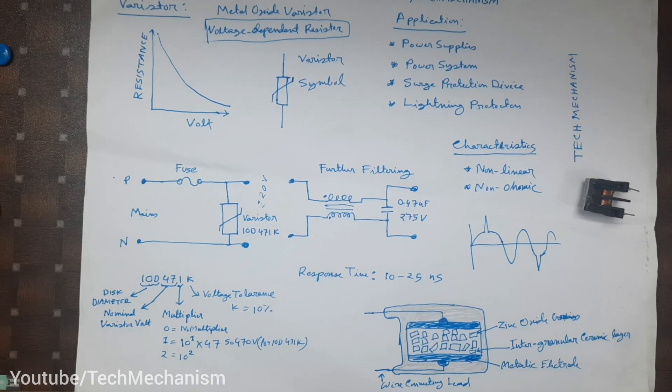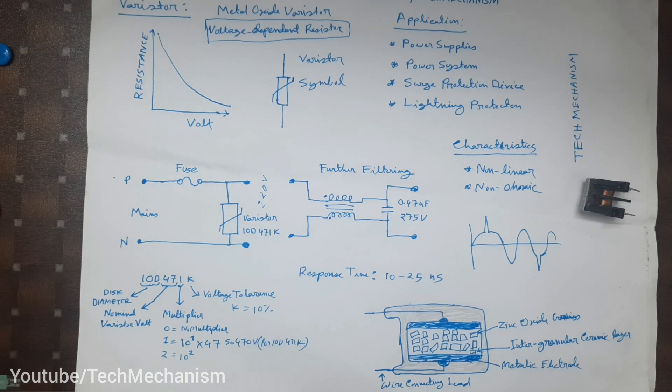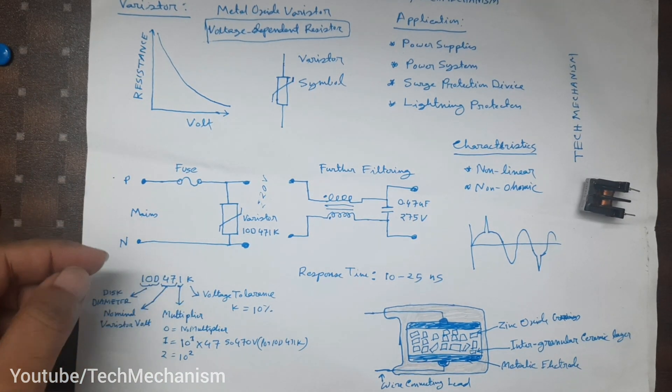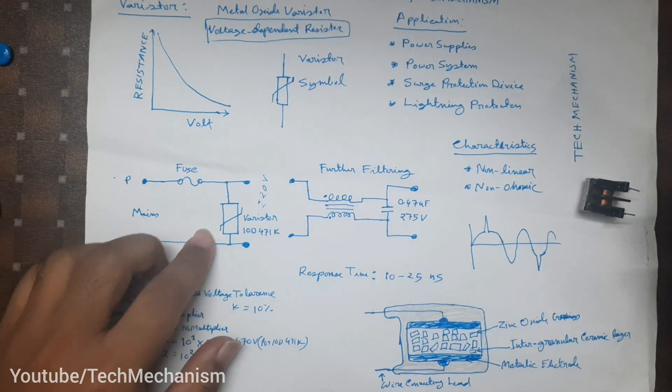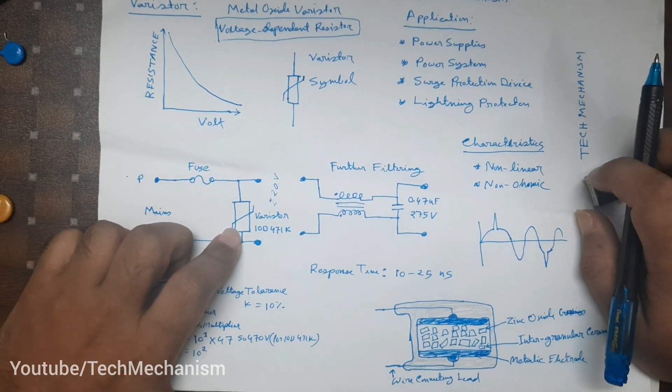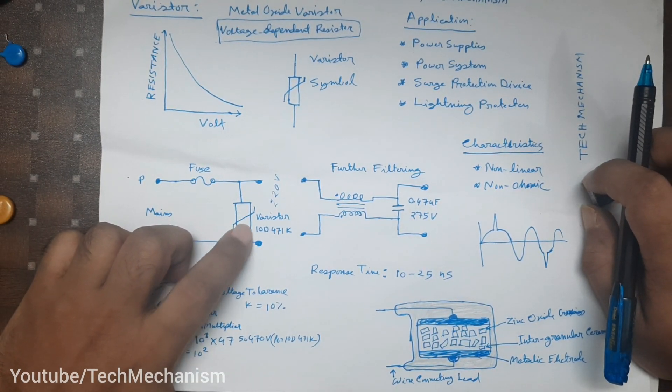How we can protect our device from this surge is really simple. We can make this circuit below 1 USD, hopefully. What we are going to use is a varistor and a fuse.